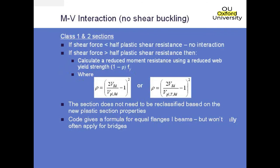The first thing we'll do is look at class 1 and 2 sections and consider a case where we don't have any shear buckling — basically the easiest case. If the shear force is less than half the plastic shear resistance, you don't have any interaction at all with the moment. If you have a shear force greater than half the plastic shear resistance, then you have to allow for some interaction with the section.